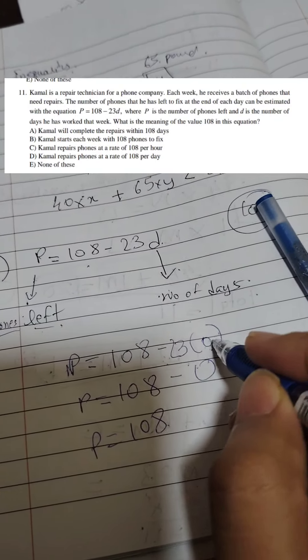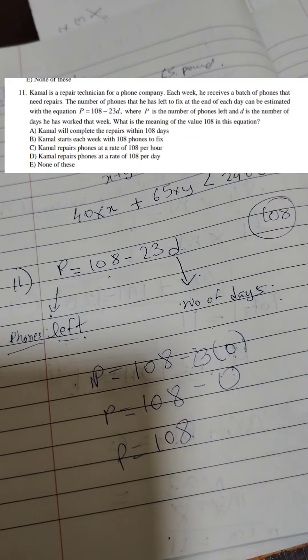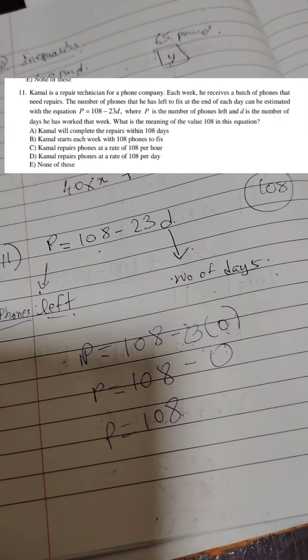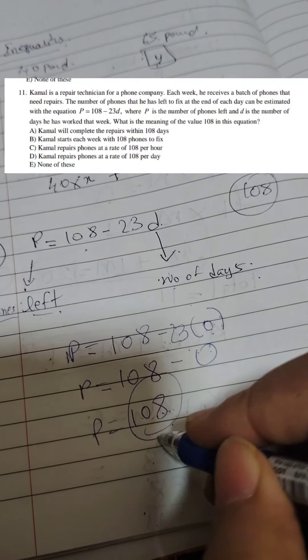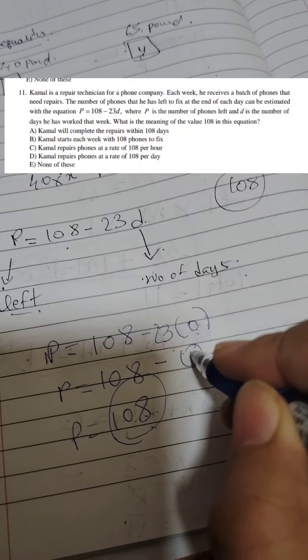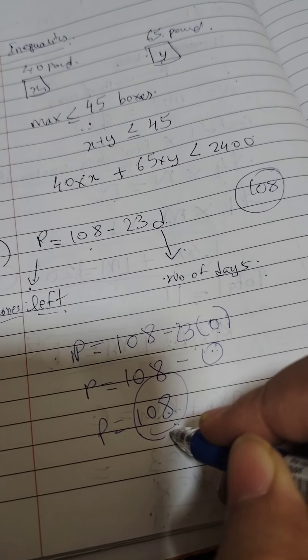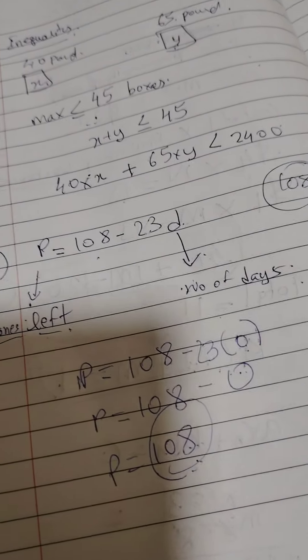So if he doesn't work even a single day, then he has 108 phones to repair. So what does that tell us? That tells us that he starts his week with 108 phones. If he doesn't work a day, then he has to fix 108 phones at the end of the week.